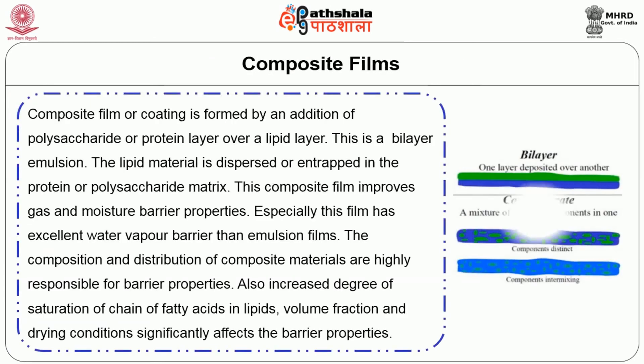The next category is composite films. A composite film or coating is formed by the addition of a polysaccharide or protein layer over a lipid layer, forming a bilayer emulsion where lipid material is dispersed or entrapped in a protein or polysaccharide matrix. This composite film improves gas and moisture barrier properties, with excellent water vapor barrier compared to emulsion films. The composition and distribution of composite materials are highly responsible for barrier properties. Increased degree of saturation of fatty acid chains in lipids, volume fraction, and drying conditions significantly affect the barrier properties.